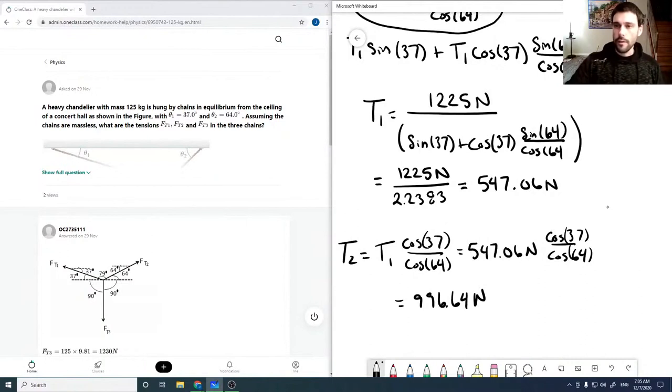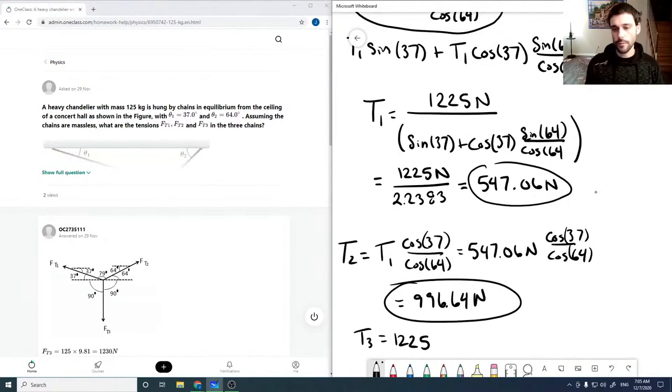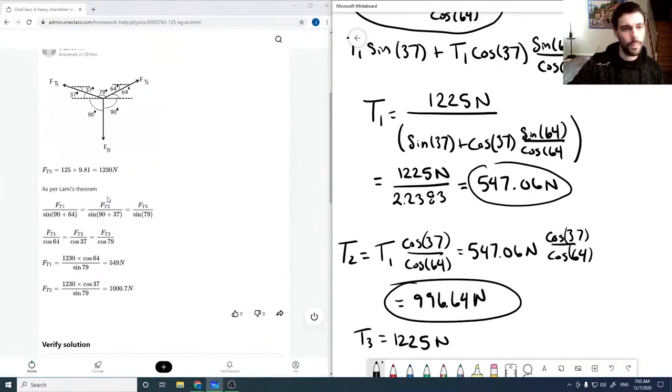Okay, now we have our three tensions. So T1 is 547, T2 is 996, and T3 is 1225. I don't know if it's because they used 9.81. They're rounding everything to three significant digits, which I suppose I should have done, so it would be 1230 with significant digits, 997, and 547.